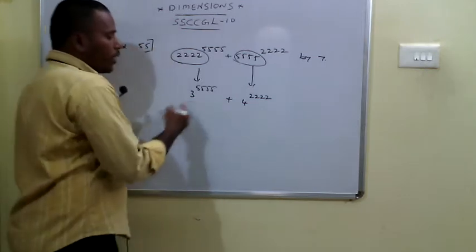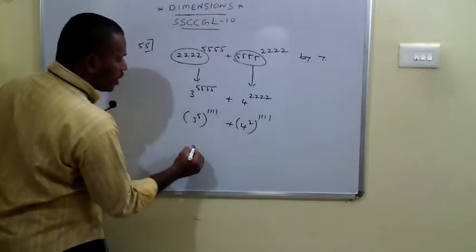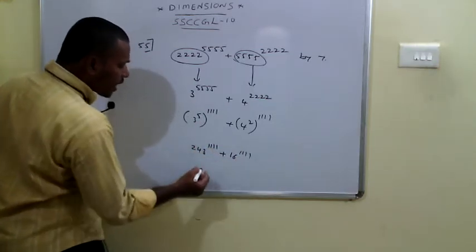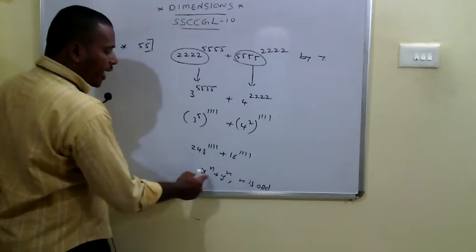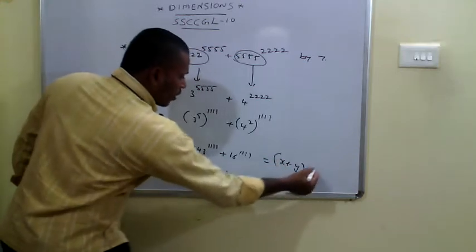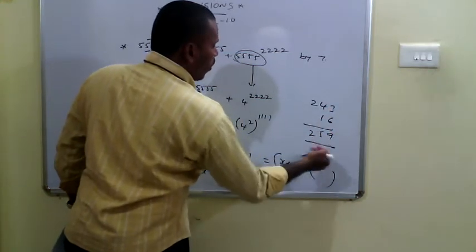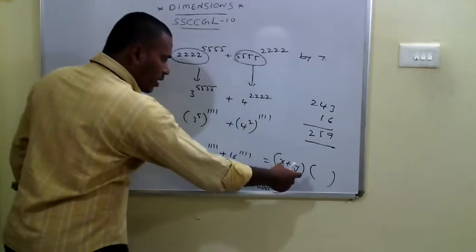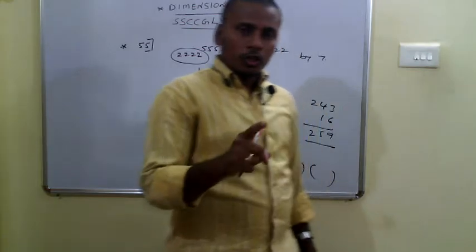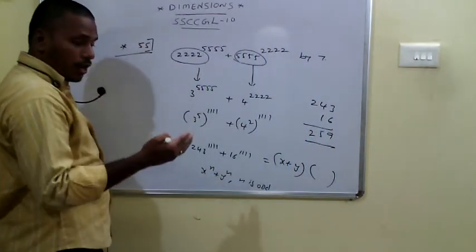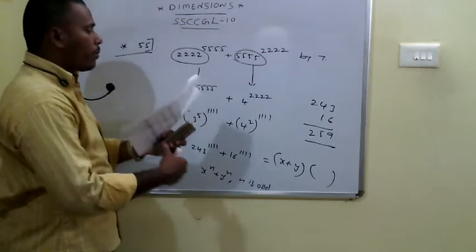Since it is in the form x^n + y^n with n odd, this is a multiple of x + y = 243 + 16 = 259. When 259 is divided by 7 the remainder is 0, so the entire expression is a multiple of 7, and the remainder is 0. This type of problem is rare and logical — mark it for review.